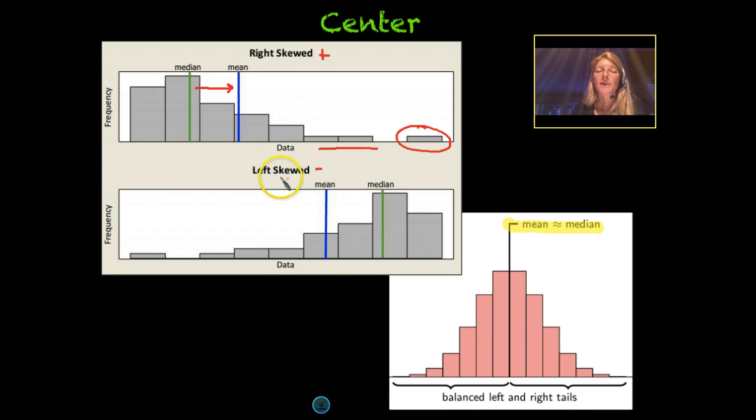The opposite happens when you have a left skewed or negatively skewed distribution. Notice where our mean is. So in this case, maybe you have $10, and I have $12, and the average of what we have is $11.